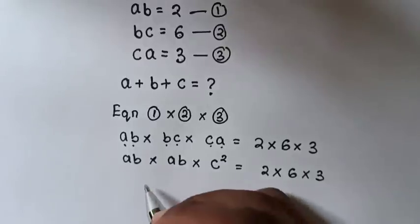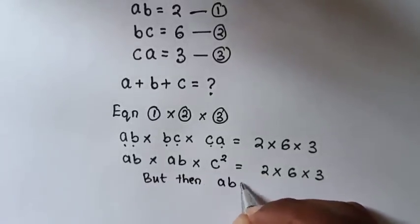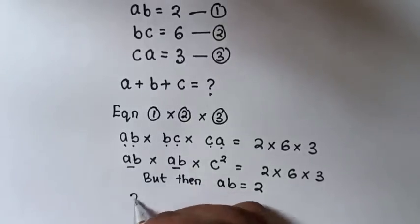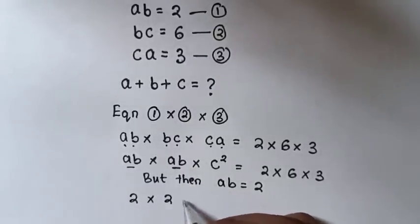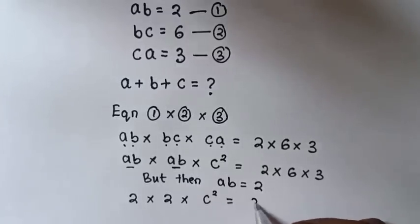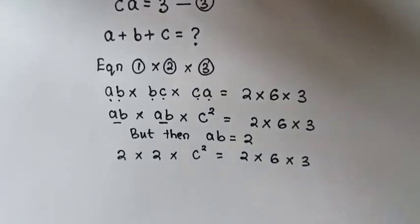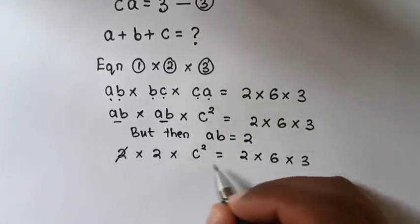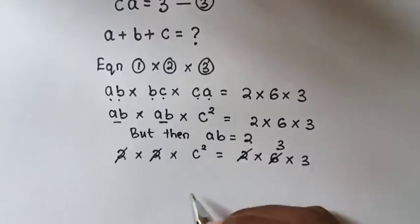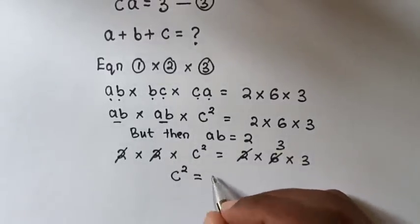Then recall from equation 1, AB equals 2. So we substitute the value of 2 here. It will be 2 times 2 times C squared equals 2 times 6 times 3. This 2 and 2 will cancel, then this 2 will simplify with the 6, so it will be C squared equals 3 times 3 equals 9.